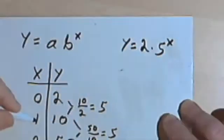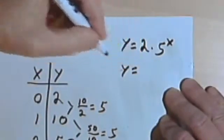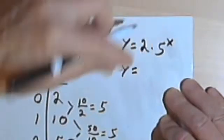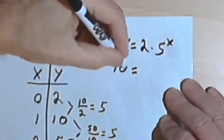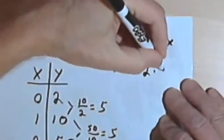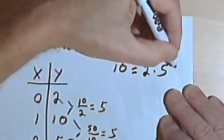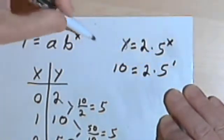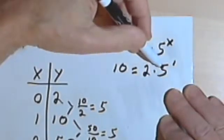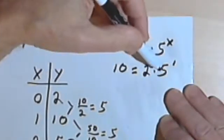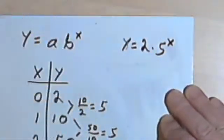Let's check that with at least one more. When y is 10, I should have 2 times 5 to the 1st power, when x was 1. Well, 2 times 5 is 10. So 10 equals 10. And I could check the rest of the numbers and we would find the same thing.